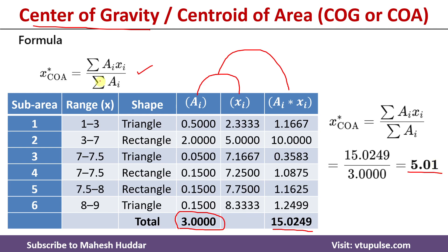This is how we can find the crisp value using the center of sum method and the center of gravity method. The remaining methods will be discussed in one more video — the link for that video is given in the description below. I hope the concept of center of sum method and center of gravity method is clear. If you like the video, do like and share with your friends. Press the subscribe button for more videos and the bell icon for regular updates. Thank you for watching.